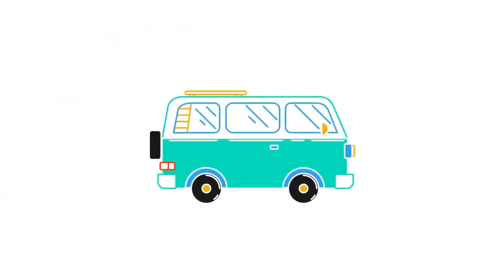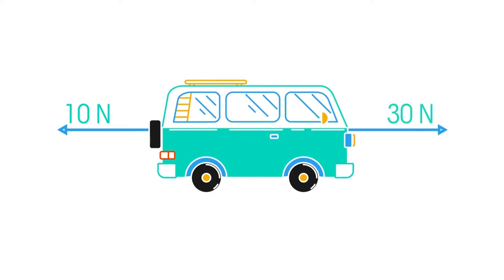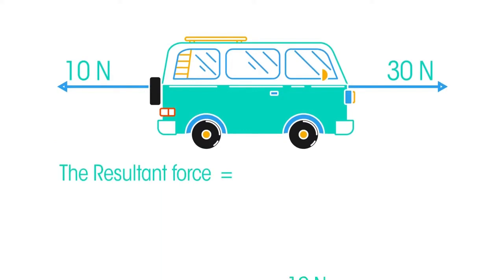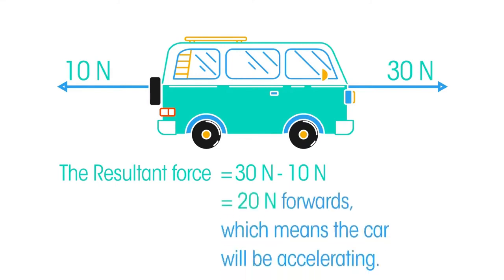For example, look at this car. There is a force of 10 newtons pushing it backwards, and a force of 30 newtons driving it forwards. To work out the resultant force, we subtract the smaller force from the larger force. So the resultant force equals 30 newtons minus 10 newtons, which is 20 newtons forwards, which means the car will be accelerating.